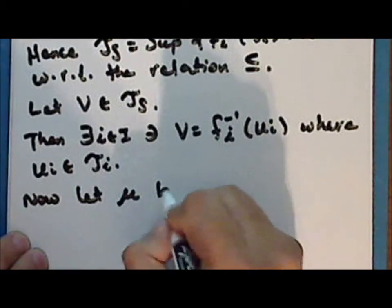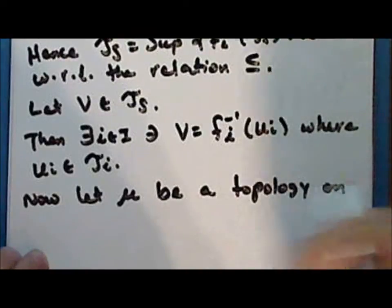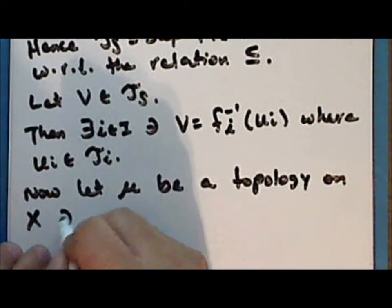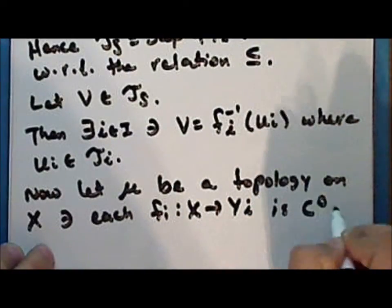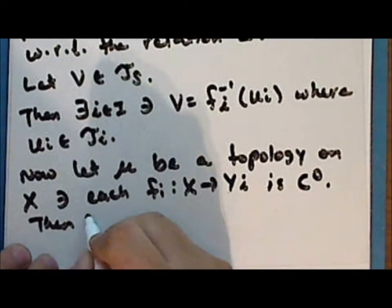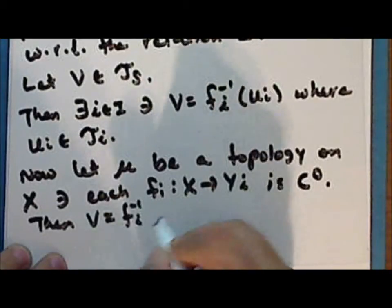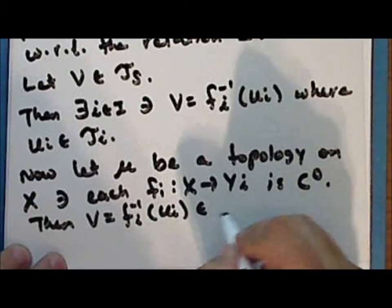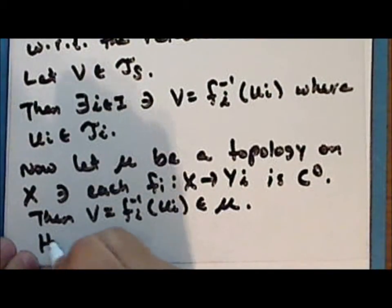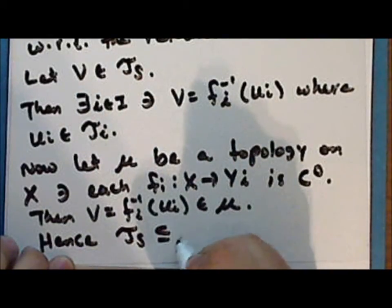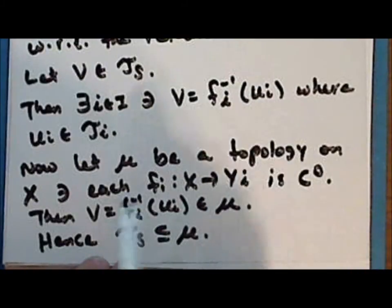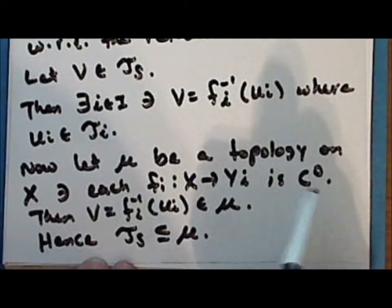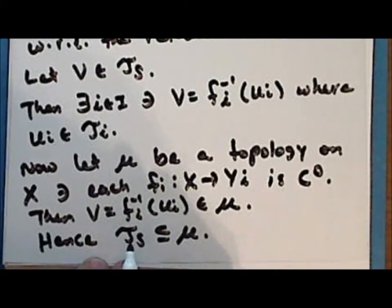Now let mu be a topology on the set x such that each of the functions f sub i mapping x into the space y sub i is continuous. Then the set v, which is the inverse image under the map f sub i of an open set u sub i in the topology tau sub i, is in the topology mu, and hence the initial topology is a subset of the topology mu. In other words, any topology on the set x that satisfies the condition that each f sub i is continuous necessarily contains the initial topology, so the initial topology is the coarsest topology possible satisfying this condition.